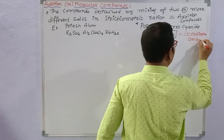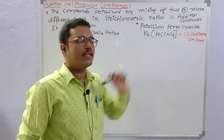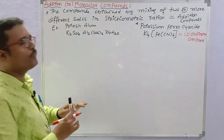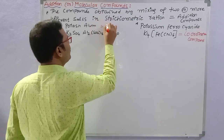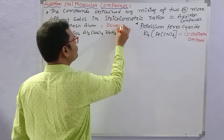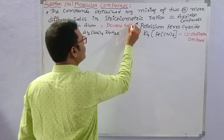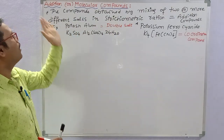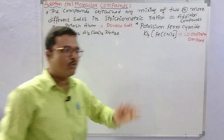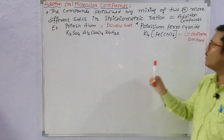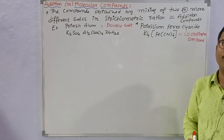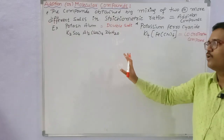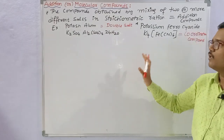Potash alum is an addition compound — specifically a double salt. Potassium ferrocyanide is an addition compound — specifically a coordination compound. So addition compounds are of two types: number one, double salts; and number two, coordination compounds. We will now discuss the definitions, important points, and examples of each.